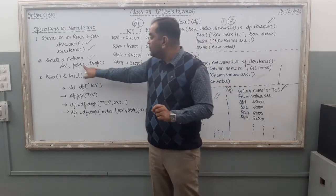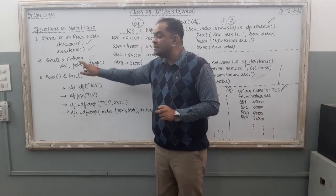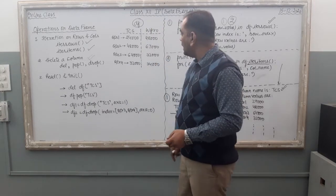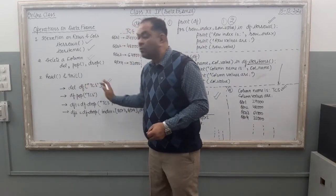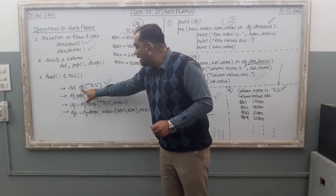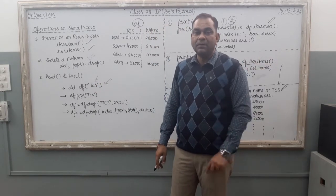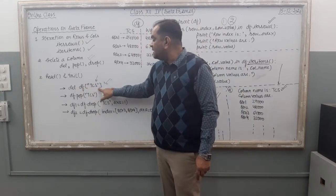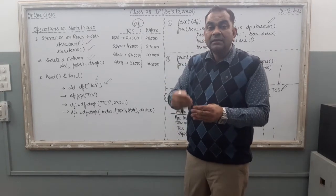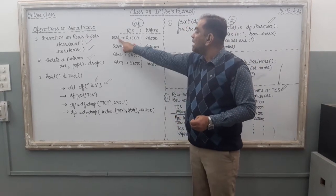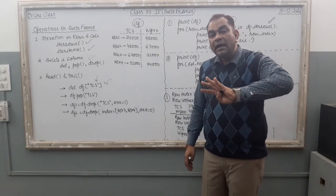If you use any Python function, you use a small bracket with the function and your attributes are inside it. The very first command is del. If you want to delete the TCS column from the DataFrame: del df['TCS']. This means the TCS column is removed from the DataFrame. Now if you use print(df), the output shows only the Wipro column — Wipro: 48,000, 67,000 — meaning the TCS column is deleted from your DataFrame.